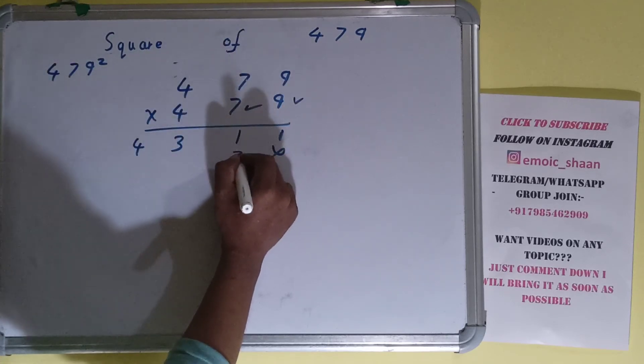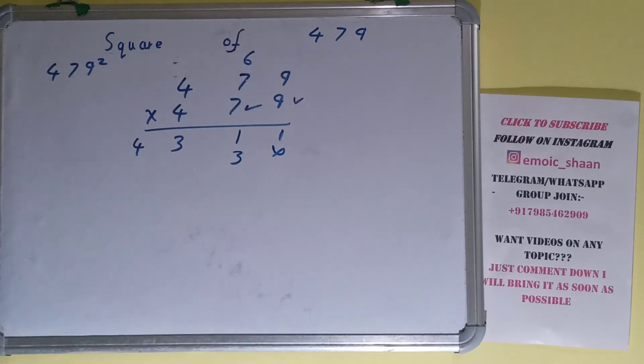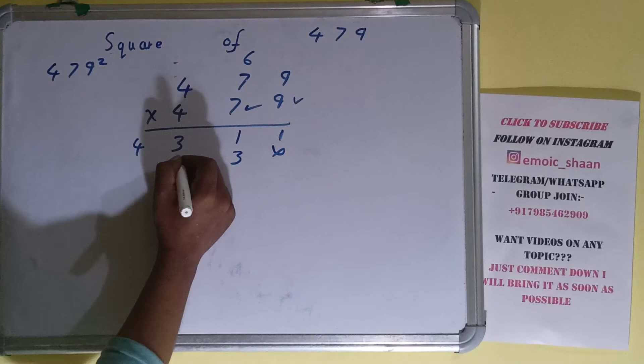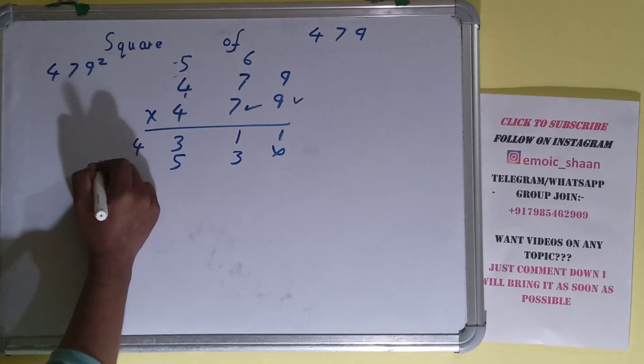Now the 7: 7×9=63, 6 carry. 7×7=49 plus 6 is 55, 5 carry. 7×4=28 plus 5 is 33.